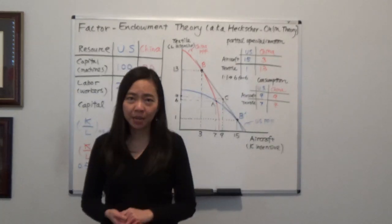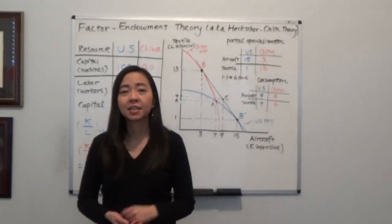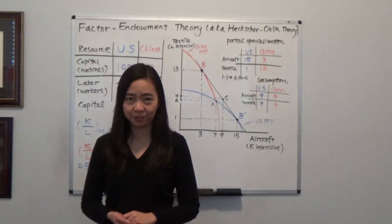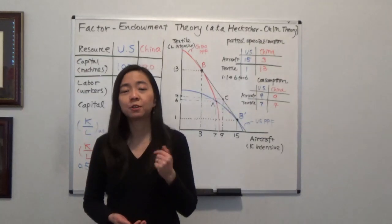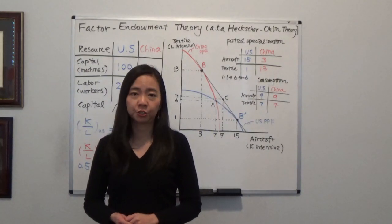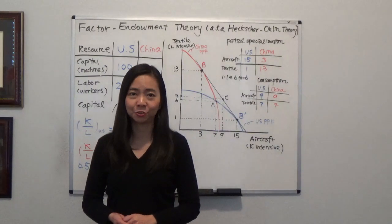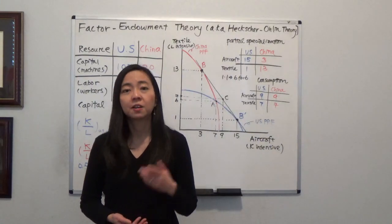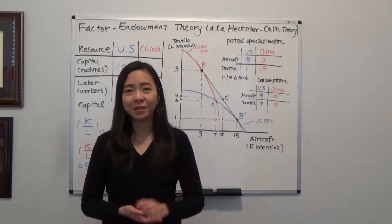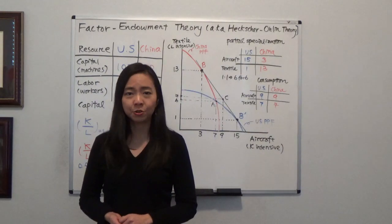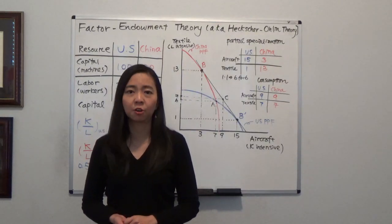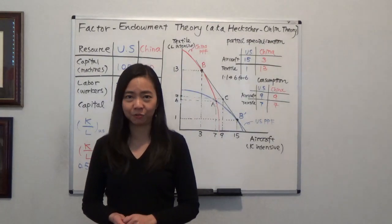Here's the bottom line of the model. If your country is relatively capital abundant, then your country has a comparative advantage in the production of capital-intensive goods. But if your country is relatively labor abundant, then your country has a comparative advantage in the production of labor-intensive goods.